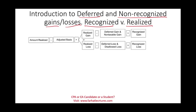Let's do a quick review of what we already learned. We learned that if we take the amount realized — that's the consideration received — when we sell an asset or a piece of property, we receive something. For simplicity, let's say we only received cash: $100,000. Then we deduct from that the adjusted basis of the property. Let's assume the adjusted basis is $70,000. Under those circumstances, we have a realized gain of $30,000.